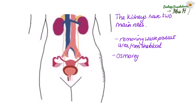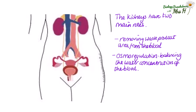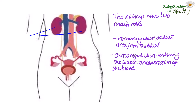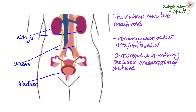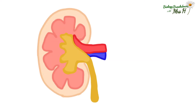We need to remove this urea from the blood. The other role of the kidney is osmoregulation, which is the balancing of the water concentration in the blood. Here are the two kidneys. These are ureters that carry the waste from the kidney to the bladder, and then out of the bladder via the urethra.